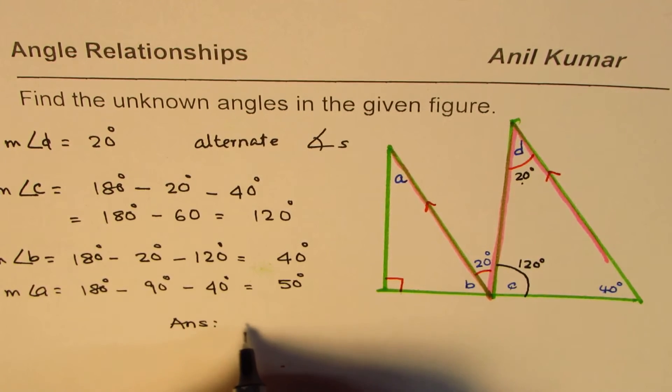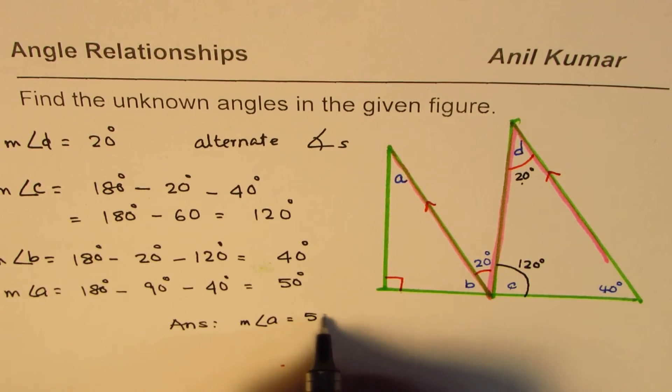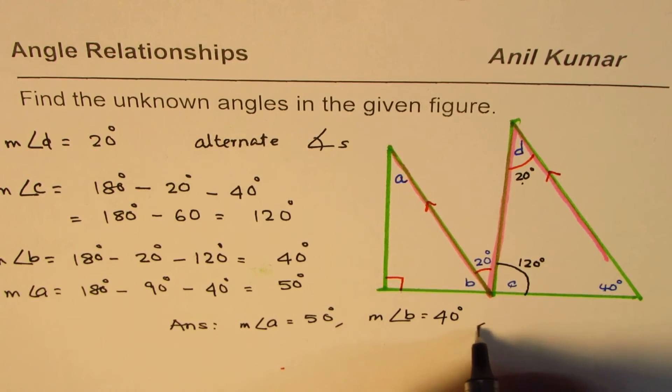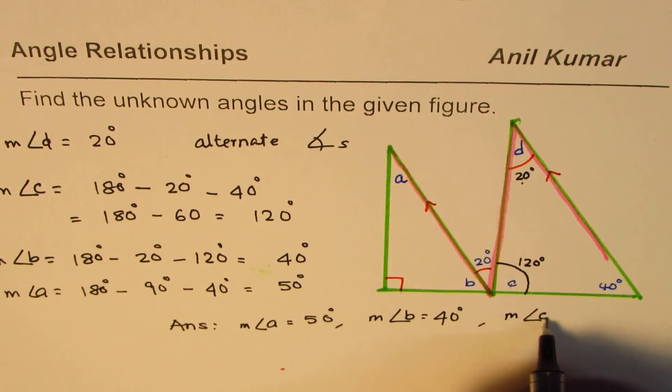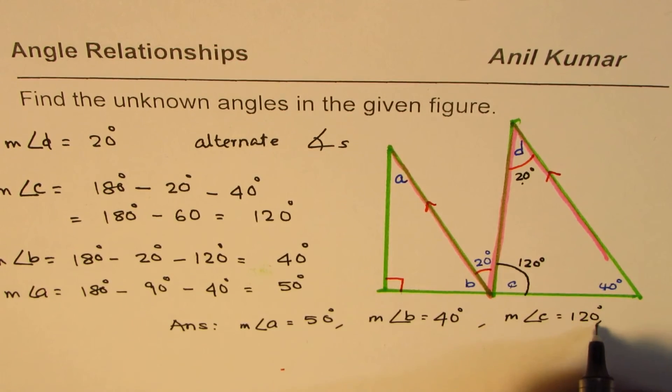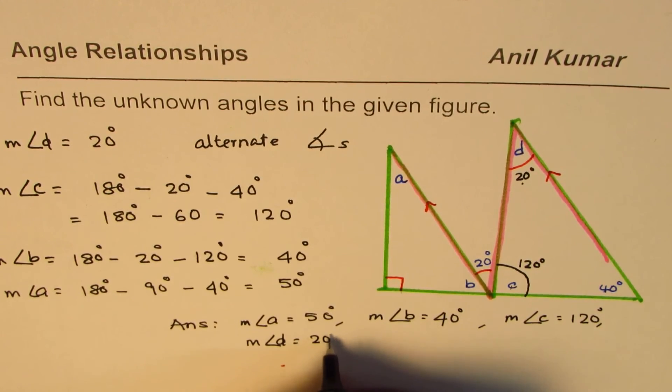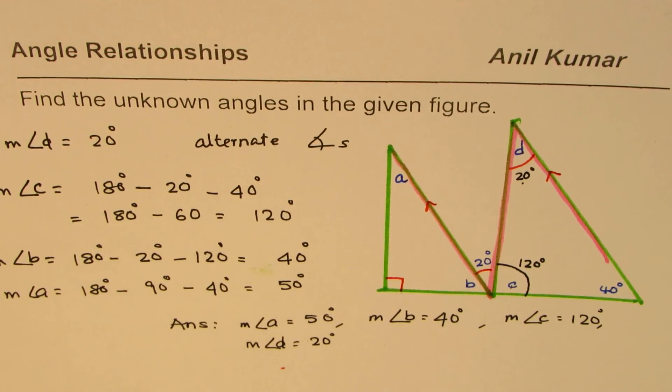Our answer is that the measurement of angle A equals 50 degrees, measurement of angle B equals 40 degrees, measurement of angle C is 120 degrees, and measurement of angle D is 20 degrees in this given diagram. I hope that helps. Thank you.